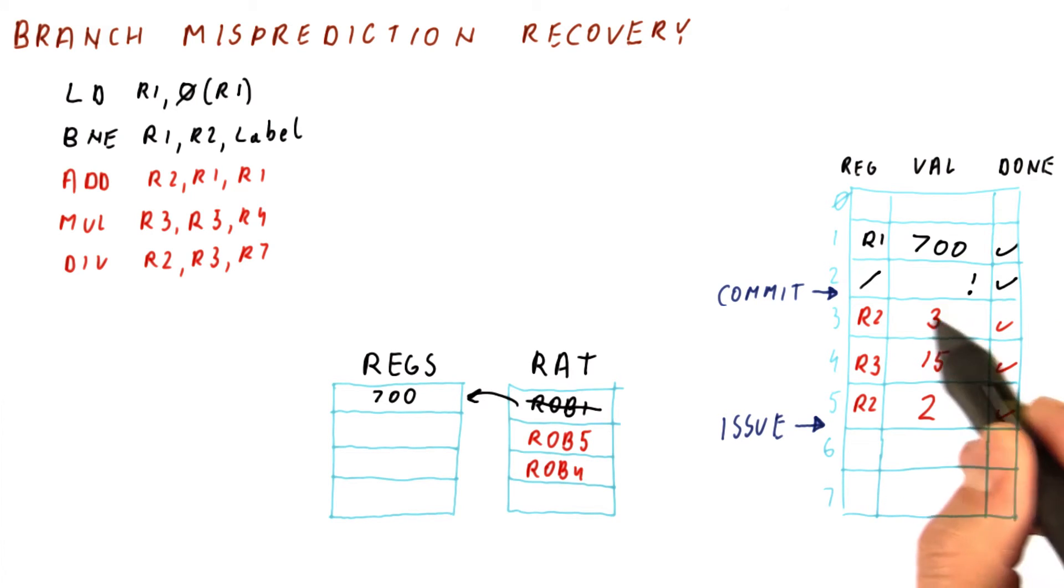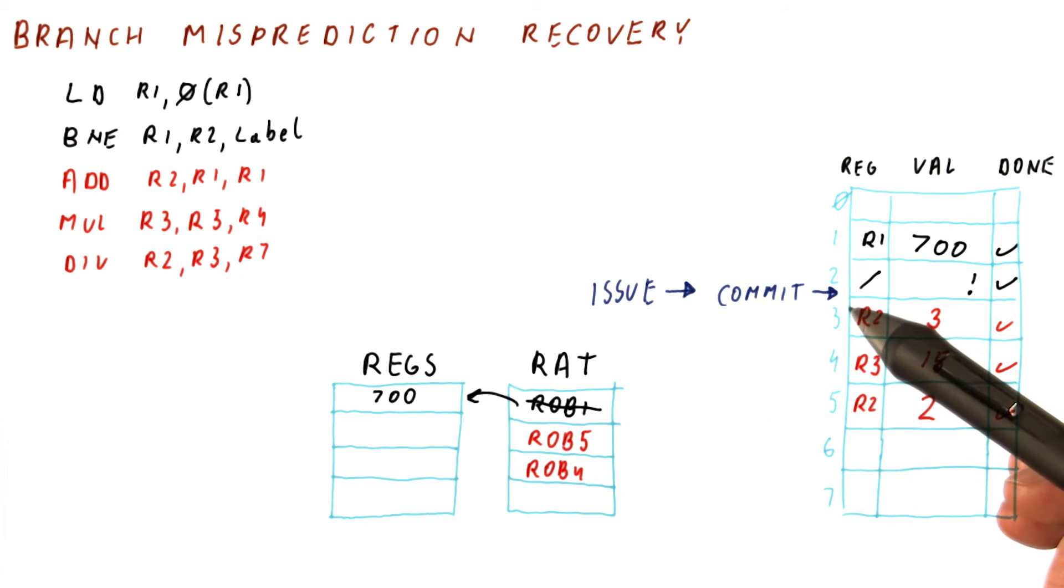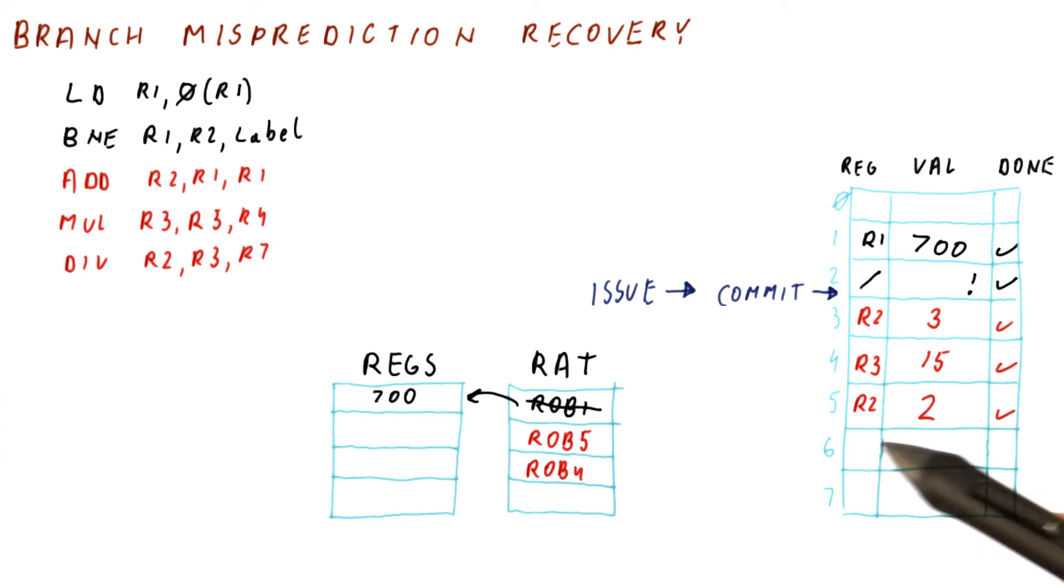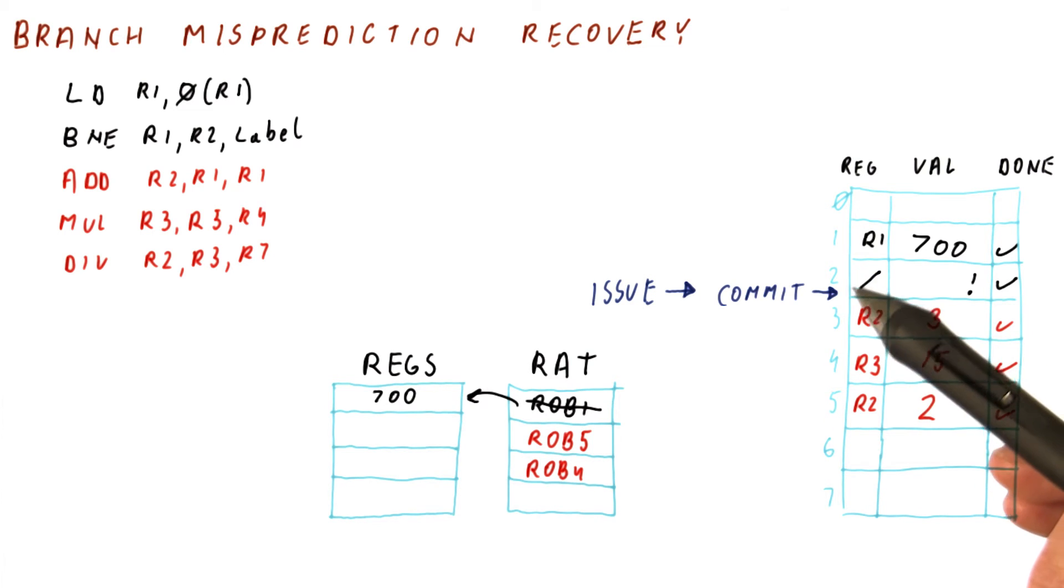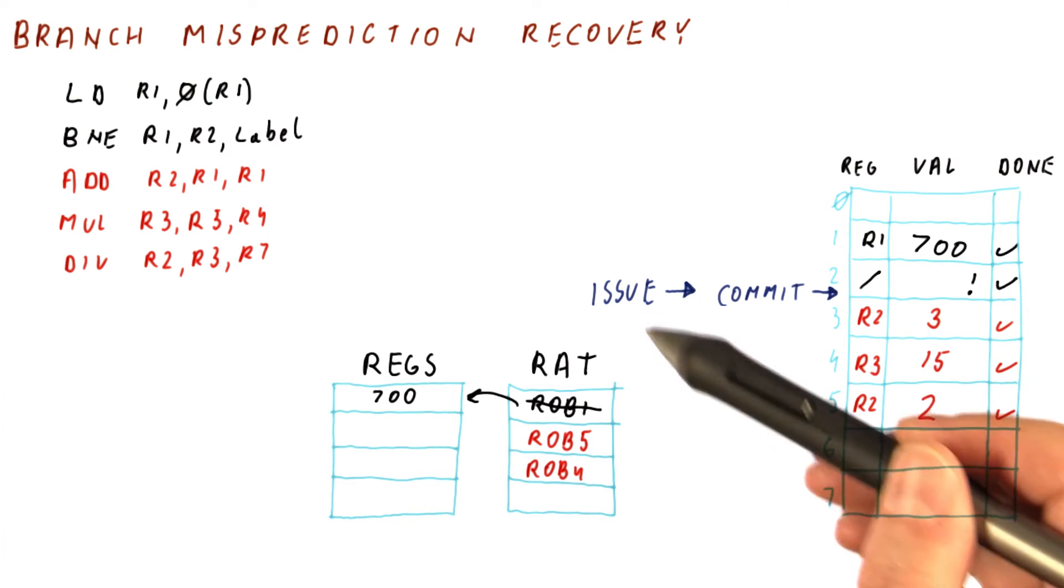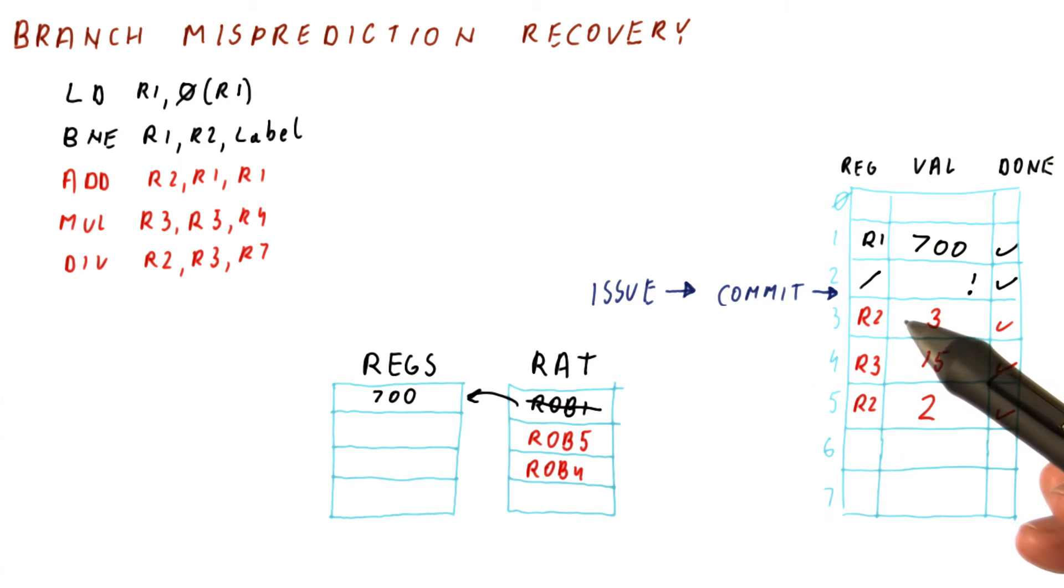To undo these instructions, what we need to do is two things. One is reverse the issuing of these instructions by simply making the ROB empty at this point. So after we have committed the branch, we make the ROB empty by simply putting the issue point in the same place. So we will issue instructions again into these slots.